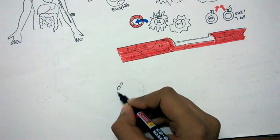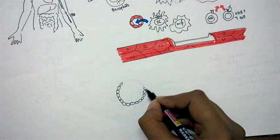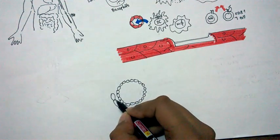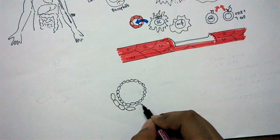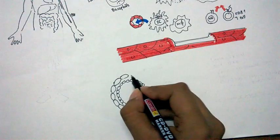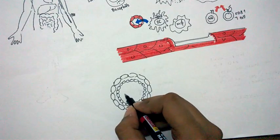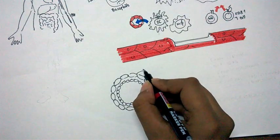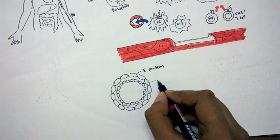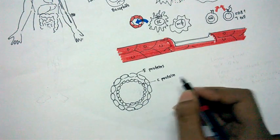Here we would see the structure of the dengue virus a little bit. Here we have the dengue virus. Dengue virus comes under the family Flaviviridae. These Flaviviridae are plus strand single-stranded RNA viruses and these single-stranded RNA get inside the cell and got converted into negative-stranded RNA and then again to the plus-stranded RNA.